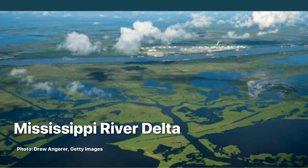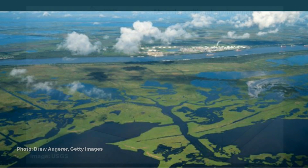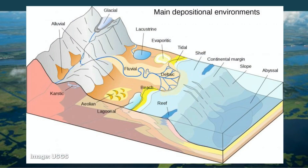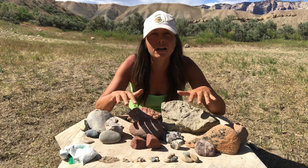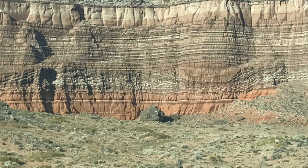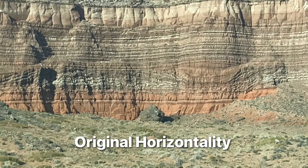Next is deposition — that's when these lithics and this material actually gets deposited somewhere. It indicates a change in energy in the system, and it can also tell us something about the medium that moved the material. This material gets laid down successionally, one layer on top of another, and if you remember, that is called original horizontality.